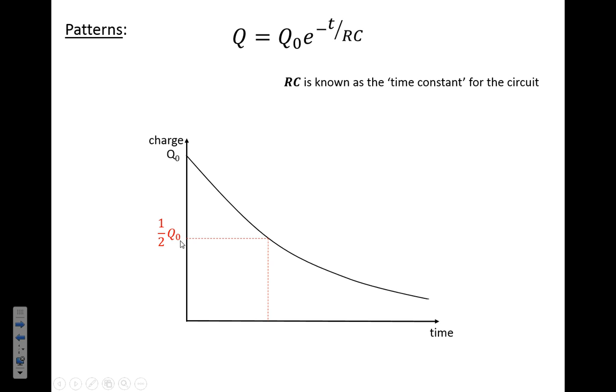After a certain amount of time, we're going to get half the charge remaining. So half the charge is gone, we're left with half. And this period of time will actually be 0.69 times the time constant. It's just known as a halving time.